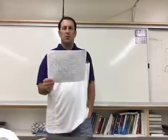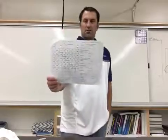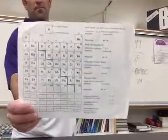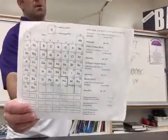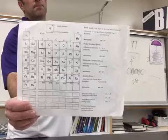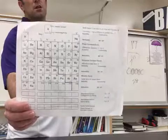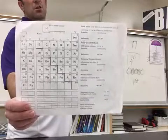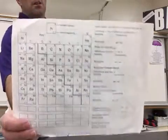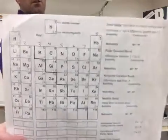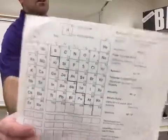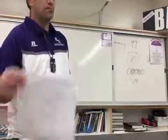If you take your periodic table and you turn to this side, you'll notice you've written charges across the top here. If you look close, in red marker I just put 1 through 8 across the top.